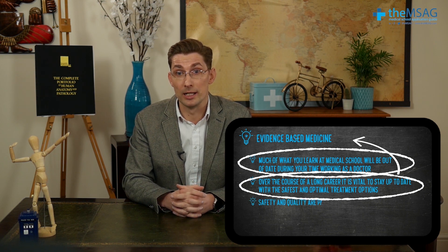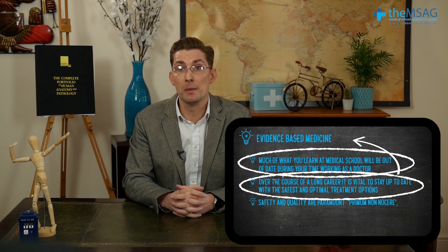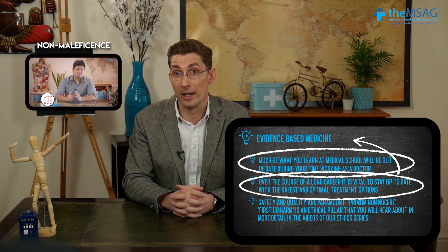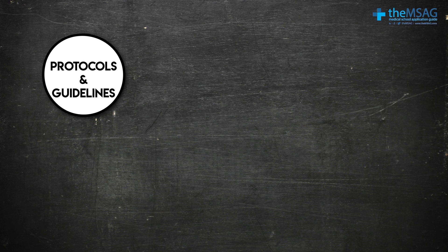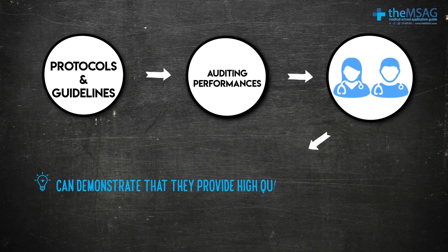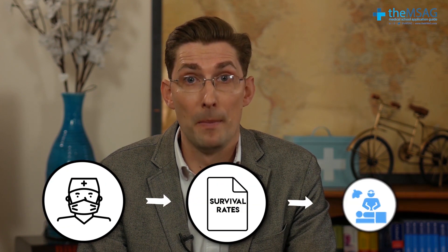Secondly, safety and quality are paramount. It invokes the Latin phrase primum non nocere — first do no harm — which is an ethical pillar you will hear about in more detail in the videos of our ethics series. By always using protocols or guidelines, as well as auditing our performance against standards of care, doctors are able to demonstrate that they provide high quality and safe clinical care. Examples of this would be surgical doctors looking at the survival rates of their patients who have undergone heart bypass surgery. If things have gone wrong, then learning from medical errors or critical incidents is essential. The process of learning from errors is a technique picked up from the airline industry, where errors are meticulously studied with the aim of preventing them ever happening again.